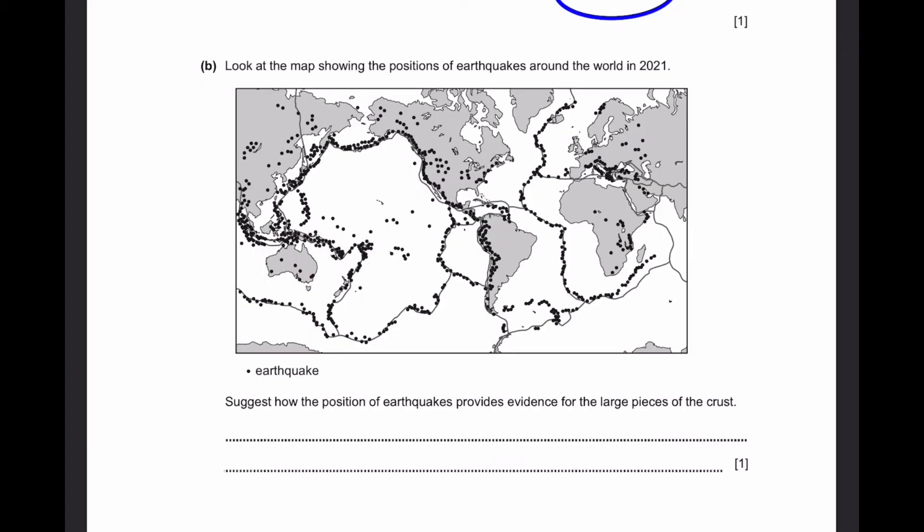Part B: Look at the map showing the positions of earthquakes around the world in 2021. All little small dots represent earthquakes. Suggest how the position of earthquakes provides evidence for large pieces of crust. We know that earthquakes occur at the edges of the plate boundaries. So, along this region, for example, this is the tectonic plate boundary, and therefore, this is where the earthquakes are happening most for that plate. So, you can say that earthquakes occur most frequently near tectonic plate boundaries.